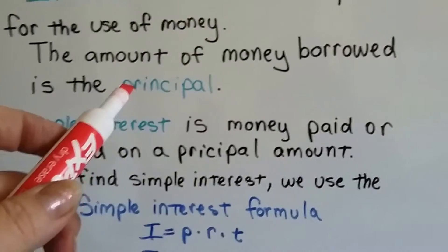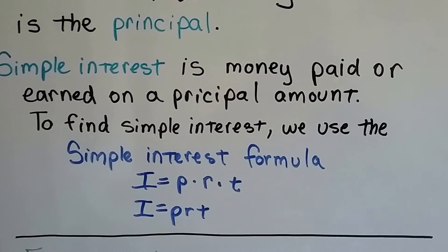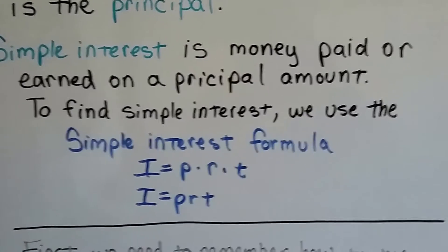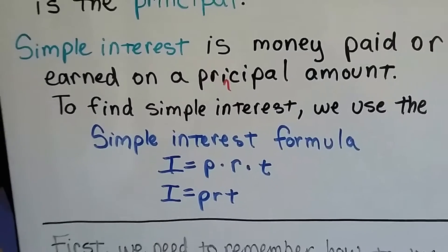The principal is the amount you borrowed from the bank or the amount that you have in your account. It's the big chunk of money. Simple interest is the money paid or earned on a principal amount.